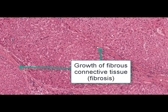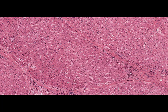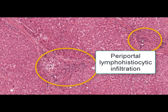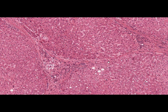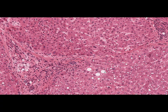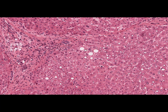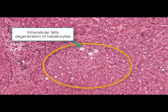We can also see growth of rough fibrous tissue around the lobules, mainly around and along the portal tracts. Lymphohistiocytic infiltration is also found there. Some hepatocytes in those lobules undergo degenerative and necrobiotic changes, in particular changes typical for intracellular fatty degeneration.